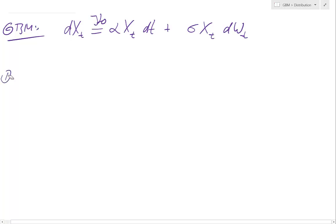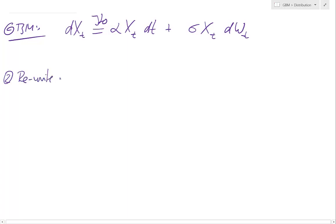Meaning what we do first, or this would be the second, we rewrite into a Stratonovich representation. Okay, how to do that? It is dXt equals alpha Xt minus, now it's the adjustment half, the volatility.